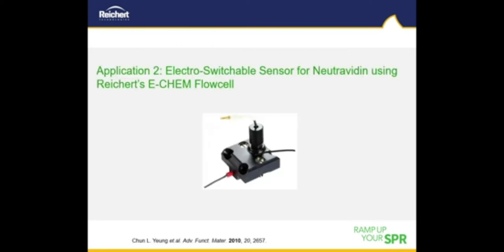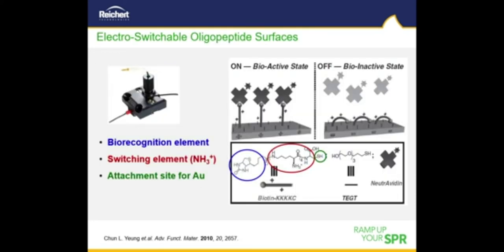I will now show an example of how the Reichert two-channel SPR platform can be combined with an electrochemical technique to create an electroswitchable sensor for detecting neutravidin. In this work, a mixed self-assembled monolayer containing a mixture of positively charged oligolysine peptides and triethylene glycol-terminated thiols was deposited on a plain gold chip surface. The oligolysine peptides have a bioactive molecular moiety — biotin — conjugated to them that can be reversibly concealed or exposed as a function of surface potential. The oligolysine peptide serves as the switching element, the biotin serves as the recognition element, and the thiol group provides the attachment point to the gold chip surface.